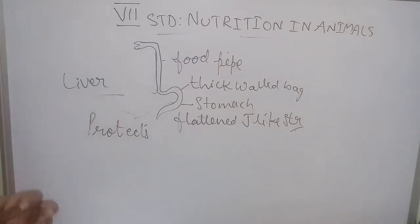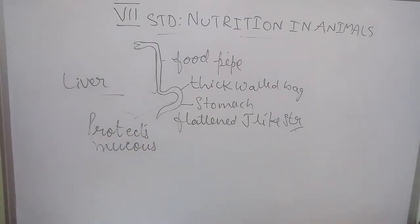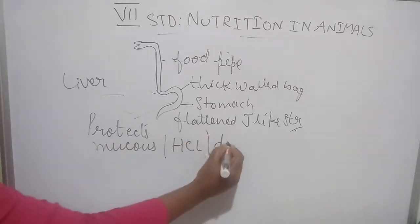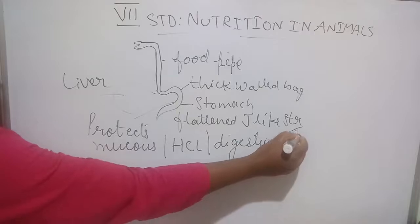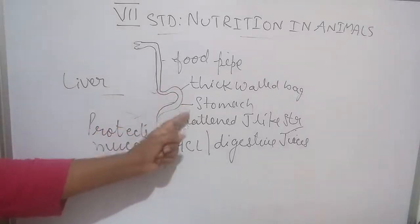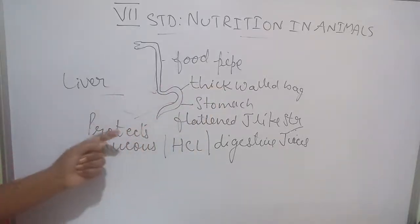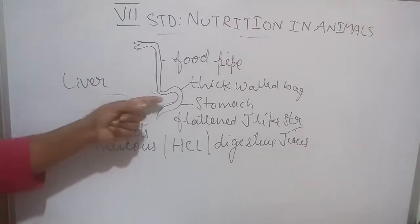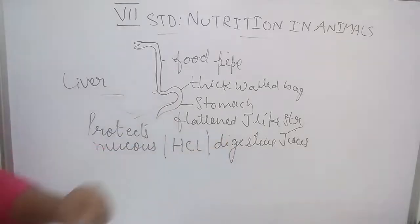This inner wall contains some important ingredients. The first one is mucus. It also contains HCl, that is hydrochloric acid. And it will have some digestive juices as well. So, the inner wall of this stomach, which is thick-walled, contains mucus, hydrochloric acid, and digestive juices.